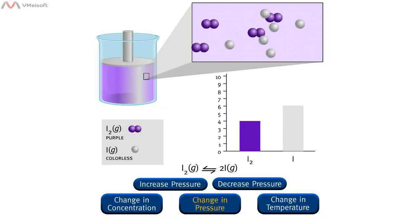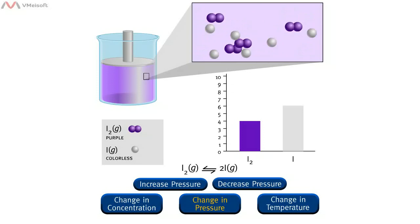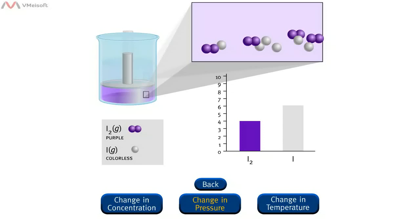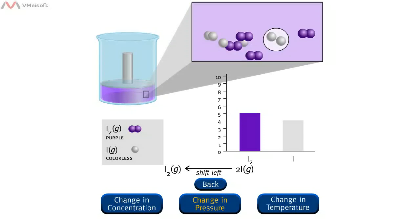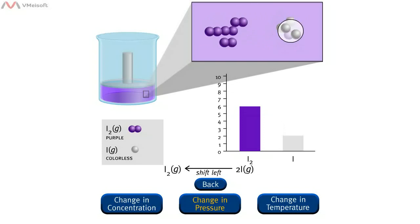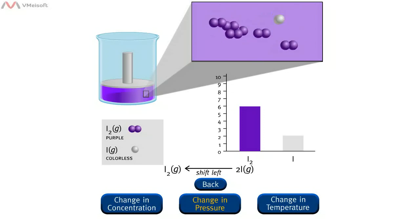Consider the equilibrium between iodine gas molecules, I₂, and iodine atoms at high temperature. Iodine molecules in the gas phase are a purple color, and iodine atoms are colorless. When you increase the pressure by decreasing the volume of the container, the system can partially offset this stress by decreasing the moles of gas. Because of the 2 to 1 mole ratio in the balanced equation, the moles of gas can be decreased if the system shifts to the left, producing iodine molecules and decreasing the number of iodine atoms, as you can see in the microscopic view. As more iodine molecules, which have a purple color, are produced, the color of the equilibrium mixture darkens.